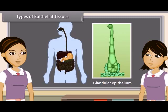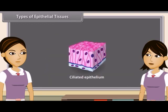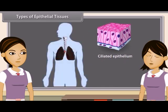Glandular epithelium is found in the mucous membrane of stomach, sweat and oil glands. Some cuboidal or columnar cells have a free border which bear thread-like cytoplasmic outgrowths known as cilia. These cells form the ciliated epithelium. It is found in sperm ducts, trachea, bronchi, kidney tubules and oviducts.